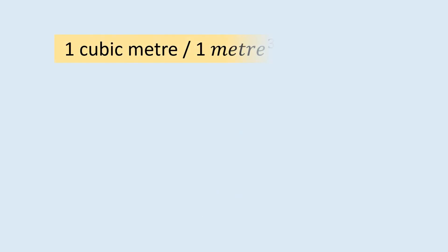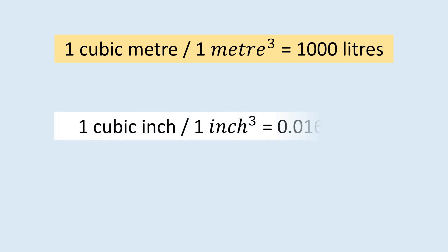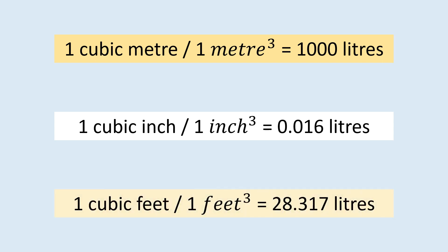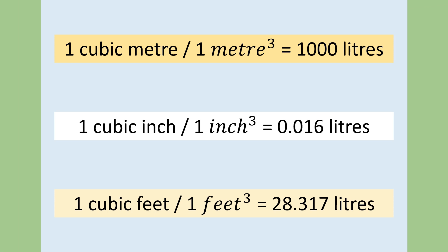Based on the units of measurement, you have to change the value to be multiplied by the volume. The three common units used in measuring a water tank are meters, inches, and feet. If you measure in meters, multiply the volume by 1000; if you measure in inches, multiply by 0.016; if you measure in feet, multiply by 28.317, which is approximately 28.32.